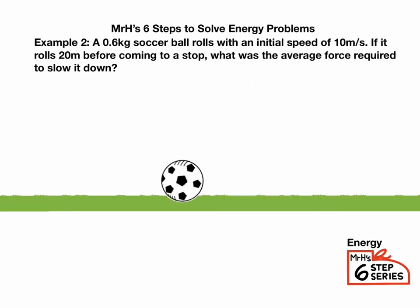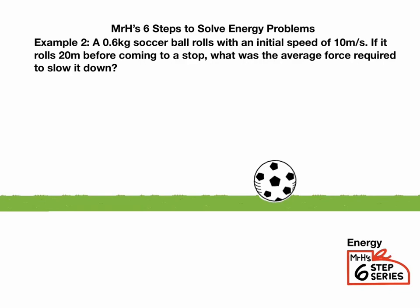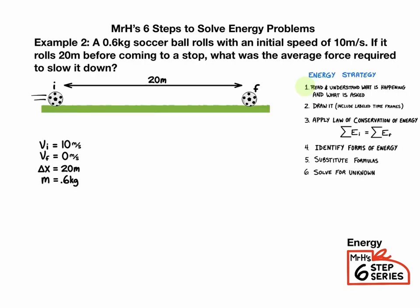Next example. A 0.6 kilogram soccer ball rolls with an initial speed of 10 meters per second. If it rolls for 20 meters before coming to a stop, what was the average force required to slow it down? Step one is to identify the question — we know step one is finished when we have a symbol with a question mark. In this case they asked for force, so F equals question mark. Step two is to draw a picture — a soccer ball that was once rolling and eventually comes to a stop. Make sure to label I for initial and F for final.